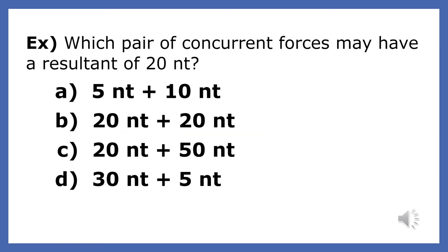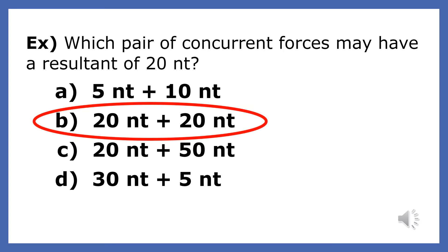You are looking at four pairs of forces that act concurrently on a body. Which pair of concurrent forces may have a resultant of 20 newtons? In order to find out which pair could have a resultant of 20 newtons, I need to find the range of possible resultants for each pair of forces by adding the two forces to find the maximum resultant and subtracting the two forces to find the minimum. The only pair that could have a resultant of 20 newtons is choice B.